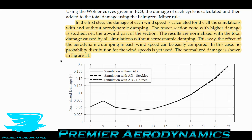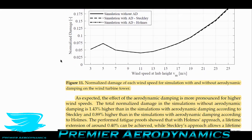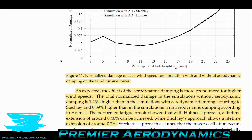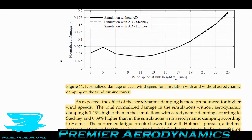The results show that as wind speed increases, aerodynamic damping has a greater effect. The effect of aerodynamic damping is more pronounced at higher wind speeds — total normalized damage in simulations without aerodynamic damping is 1.43% higher than in simulations with aerodynamic damping. This means life expectancy can increase by up to 0.7% with more damping, which means the vortex shedding is not moving the tower around as much.